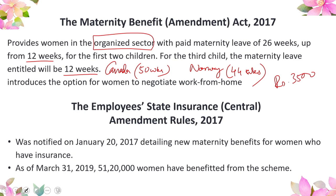The 1961 act also states that no company shall compel its female employees to do tasks of laborious nature, tasks that involve long hours of standing, or those likely to interfere with pregnancy, the normal development of the fetus, cause miscarriage, or otherwise adversely affect her health. The Maternity Benefit Amendment Act is considered comprehensive as it covers many factors missed in the earlier act, giving comprehensive coverage to working and pregnant women.